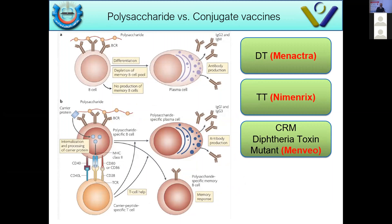Specifically, Menactra — from one company — uses diphtheria toxoid as its carrier. Nimenrix — another company — uses tetanus toxoid. And Menveo, the third quadrivalent meningococcal conjugate vaccine, uses something called CRM, which is a diphtheria toxin mutant carrier protein.